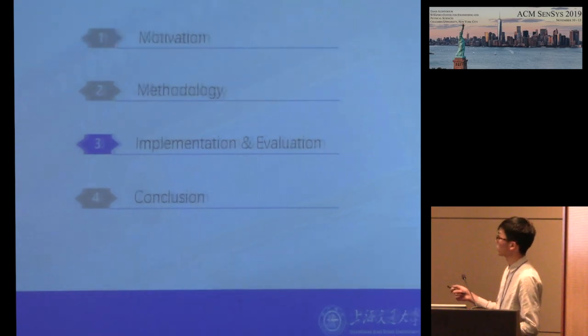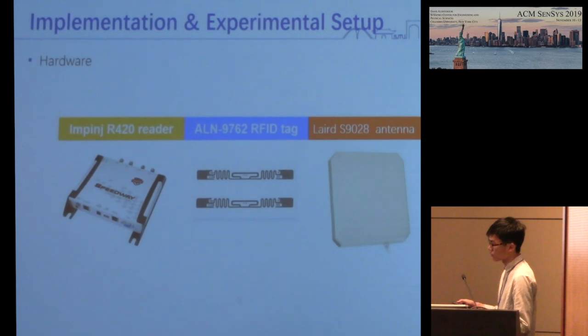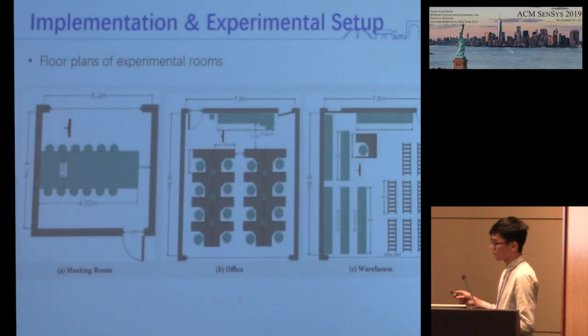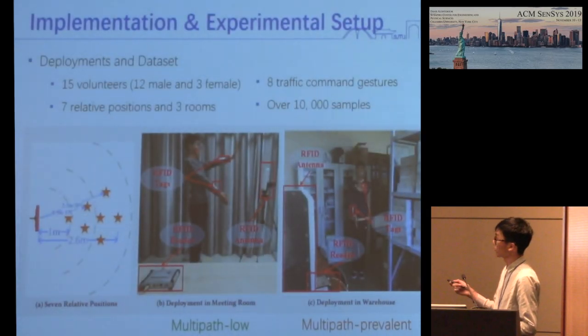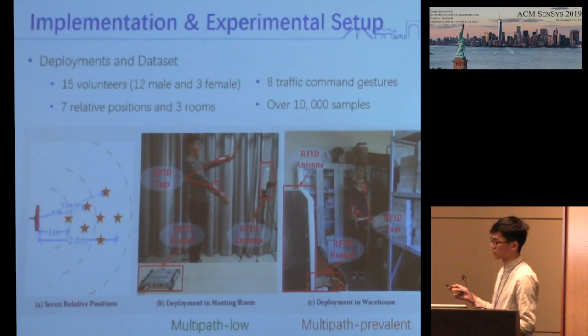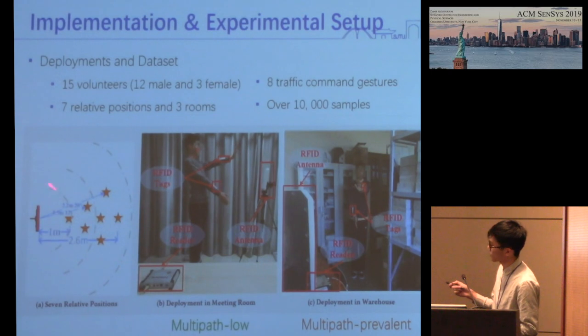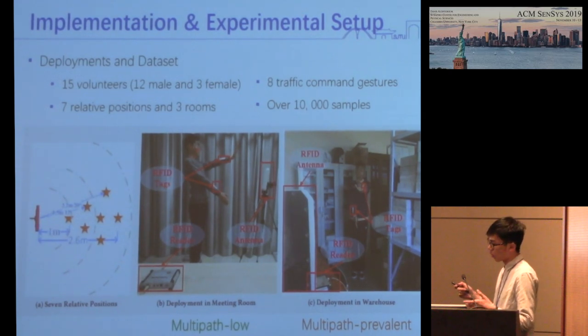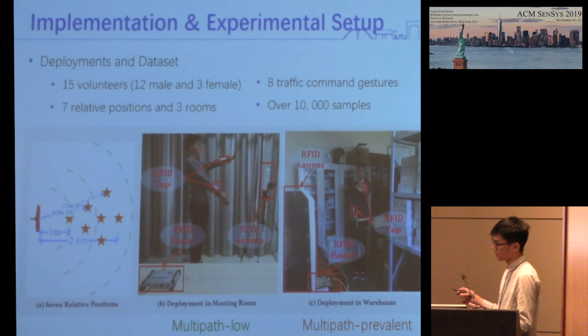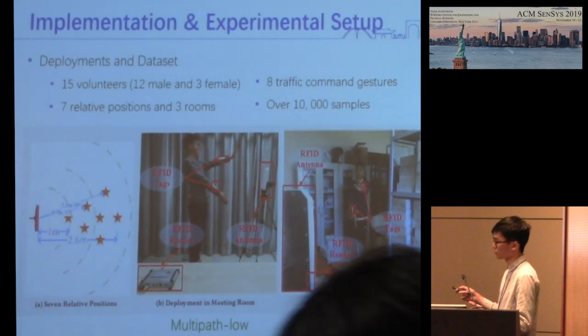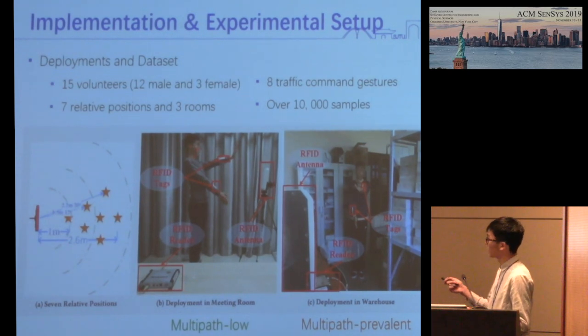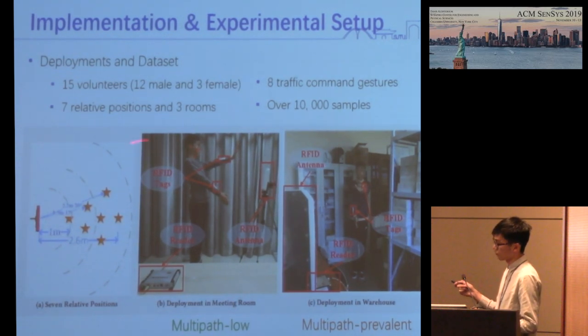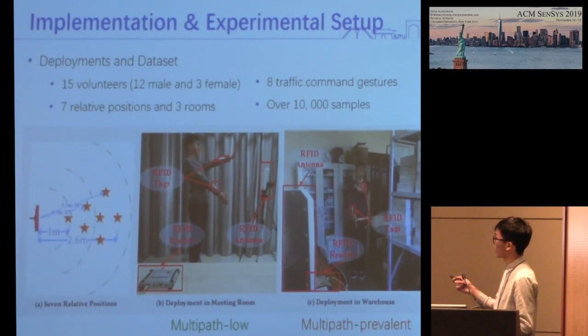The last part is implementation and evaluation. The hardware devices we use are off-the-shelf. These three pictures show three different environment rooms. There are seven possible relative positions of the user standing area and the antenna. The hardware deployment diagram shows the possible area where users are required to stand. The right eye captures stand for the antenna and the real-world deployment in two rooms: a meeting room and a lab, shown in the right two pictures.